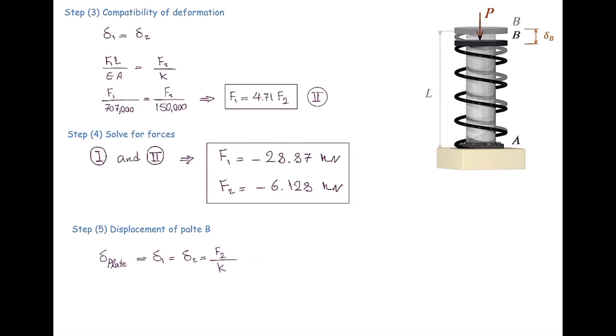So I'm going to use delta 2, which is F2 divided by spring constant. F2 was already determined, and K is given. Make sure to use the right unit. F2 was calculated in kilonewton, so I'm going to use K as kilonewton over meter, from which we can determine the deformation or the movement of plate B.